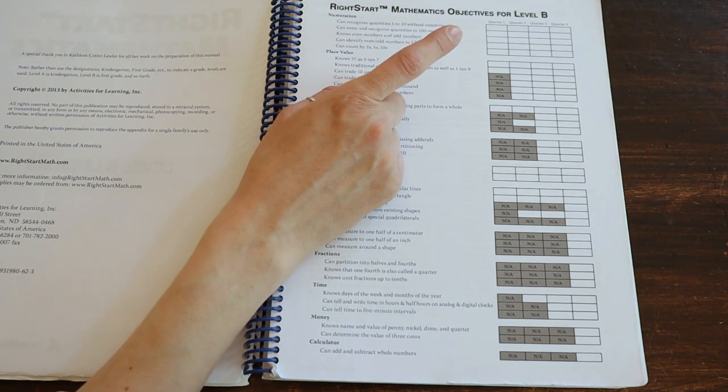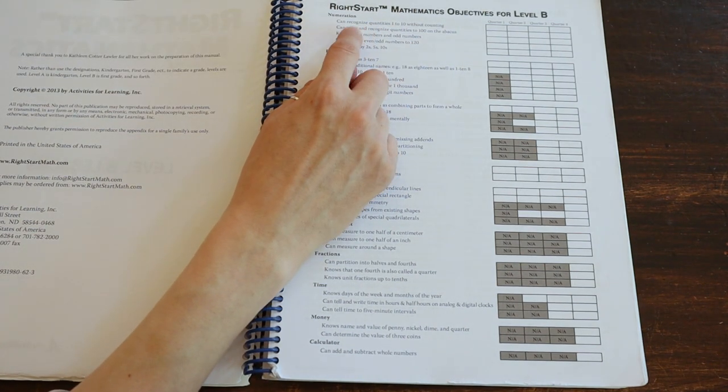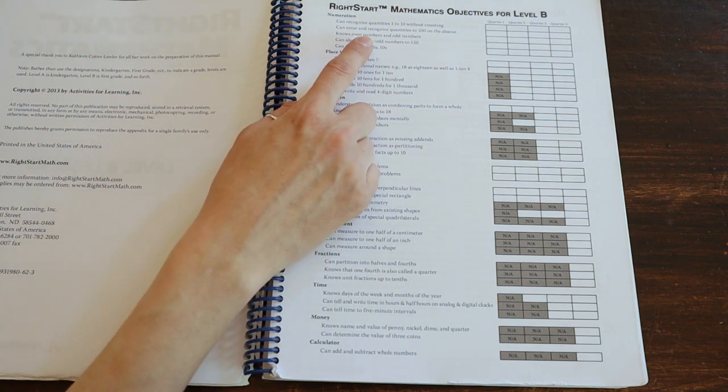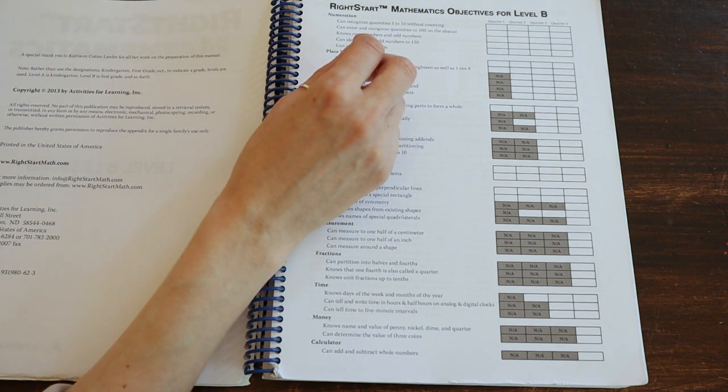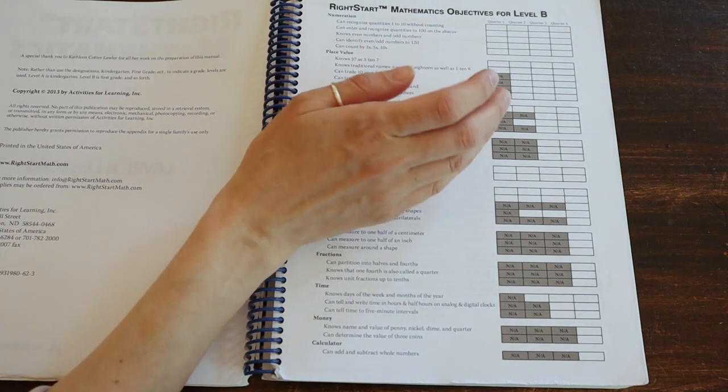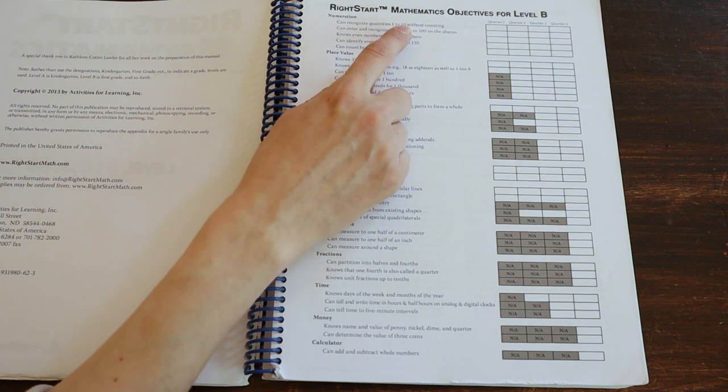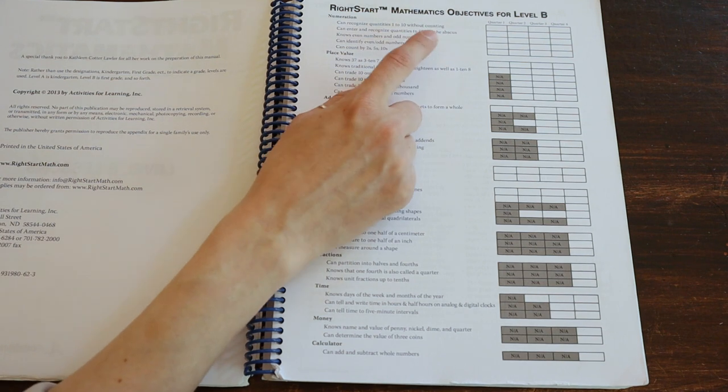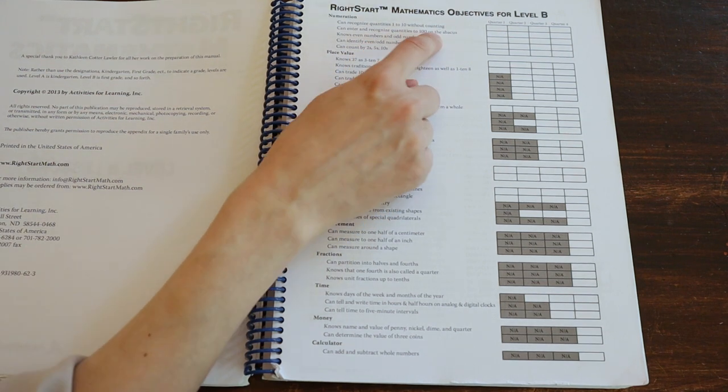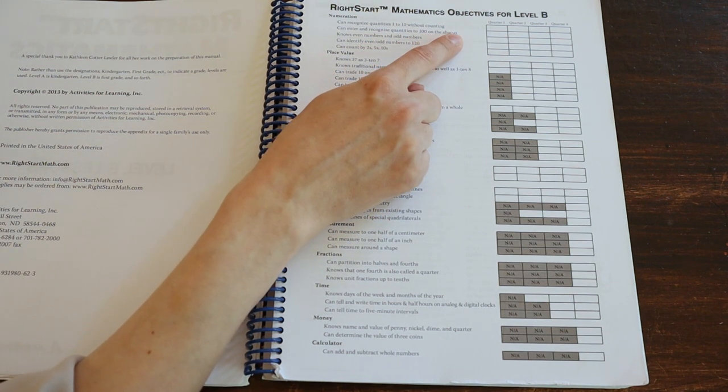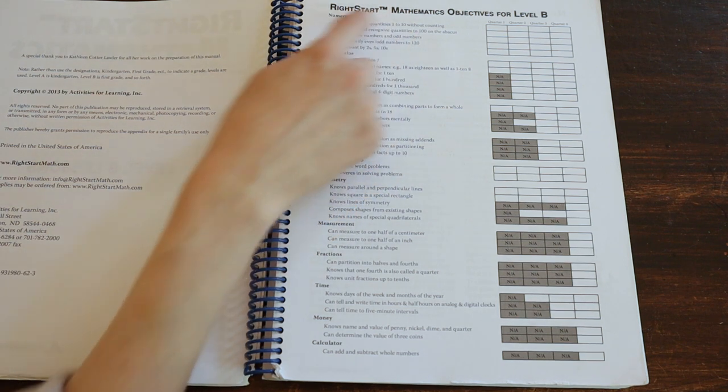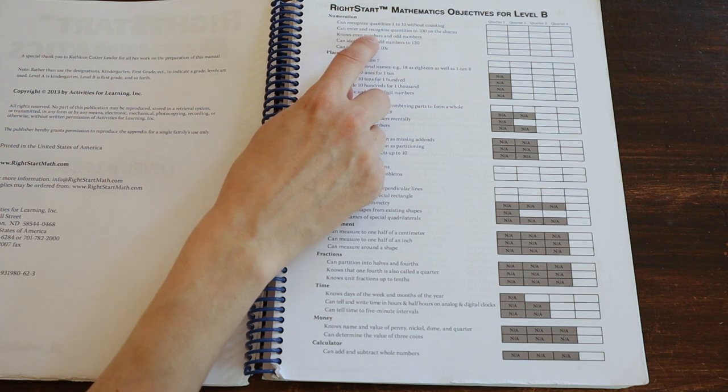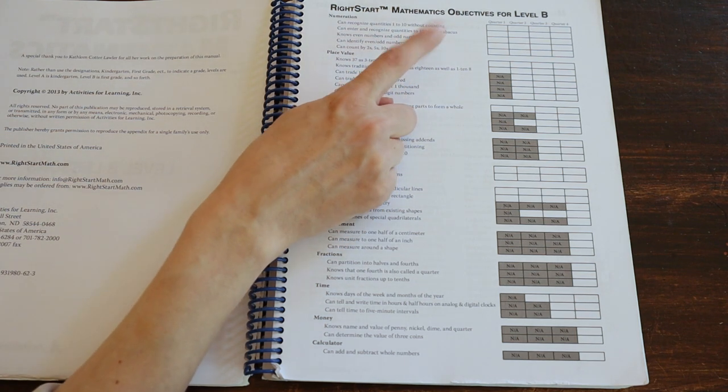So numeration, let's start from the beginning. This is understanding number sense and it's a little bit about place value. It's knowing and understanding how numbers are laid out and patterns in numbers. So being able to recognize 1 through 10, this is going back to a little bit of Level A. You can enter quantities up to 100 on the abacus and recognize them and understand them. This is all about abacus work, essentially.